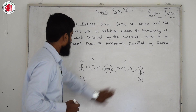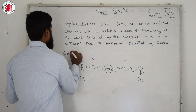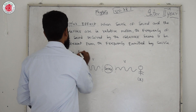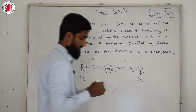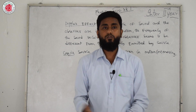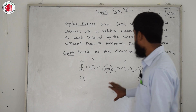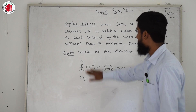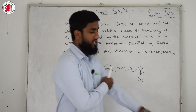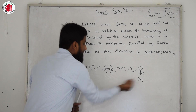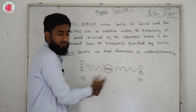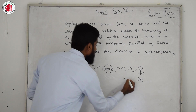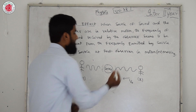Case 2: source at rest, observer in motion. The source S is at rest. There are two observers — X and Y — both in motion. Observer X is moving towards the source, and observer Y is moving away from the source. Let their velocity be v₀.